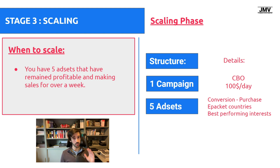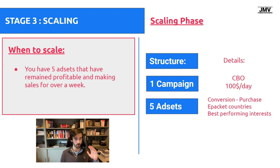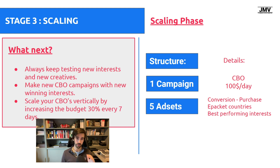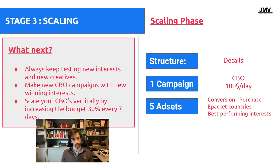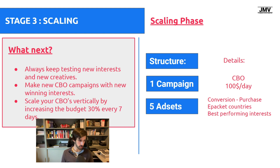When you have ad sets that are consistently making sales and staying above your break-even ROAS, being profitable — that's when it's time to scale. We're going to scale when you have five ad sets that have remained profitable and making sales consistently for over a week. This tells you these ad sets have the potential to be scaled and it wasn't just lucky sales. For scaling, make a new CBO campaign and duplicate your best performing ad sets from your testing campaign into it — five ad sets in one CBO campaign at $100 a day, conversions traffic, optimized for purchase, e-packet countries, and best performing interests one per ad set. Never stop your testing campaign — always keep testing interests and creatives in the back because your top five interests won't last forever. Keep making new CBO campaigns with winning interests and scale your CBOs vertically by increasing the budget by 30% every seven days, as long as they remain profitable.